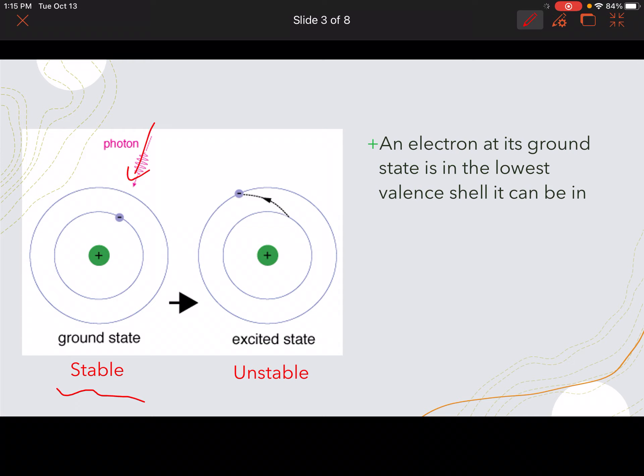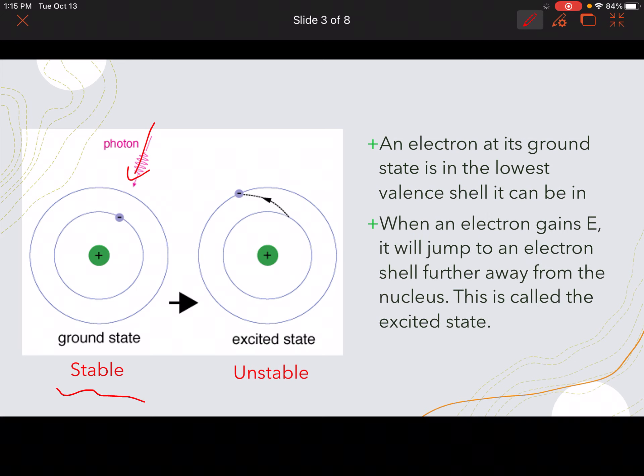Along comes a photon here. Here, the electron absorbs the energy, and as we see, it now moves to the excited state. Now, this is unstable, this excited state here.